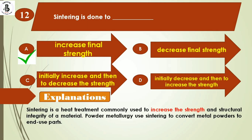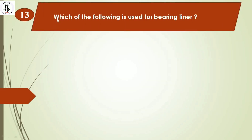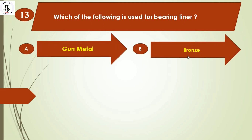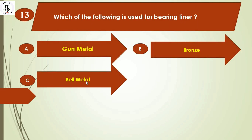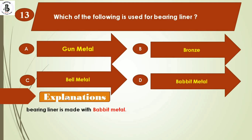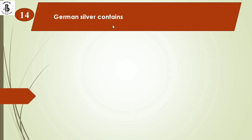The next question: which of the following is used for bearing liners? Option A) gun metal, option B) bronze, option C) bell metal, option D) Babbitt metal. Bearing liners are made with Babbitt metal, so the right answer is option D.